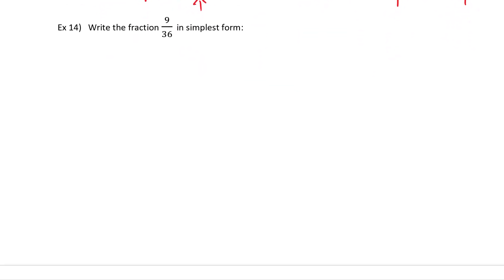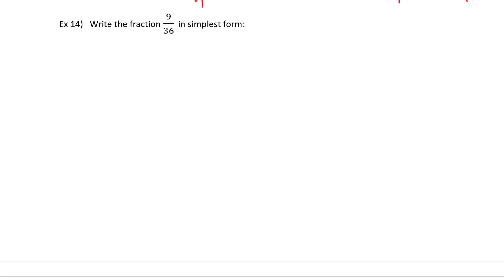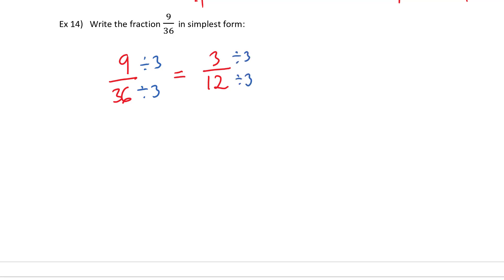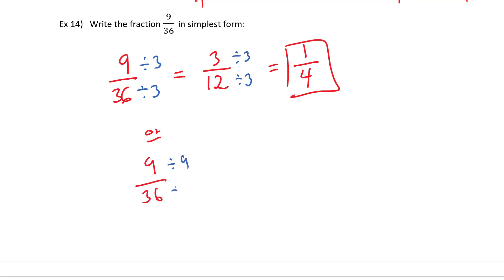Let's try one more together: write the fraction 9 over 36 in simplest form. If you only see a 3, take a 3 out of the top and bottom — 9 divided by 3 is 3, and 36 divided by 3 is 12. This is not in simplest terms yet, so pull out another common factor of 3 to get 1 quarter. Alternatively, if you saw right from the beginning that you could pull out a 9, you can do it in one step to get 1 over 4. All that matters is you get the same answer in simplest terms.